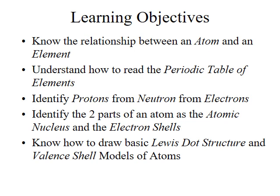So the learning objectives for today: you're going to learn about the relationship between the atom and the element, understand how to read the periodic table of elements, be able to identify protons from neutrons from electrons, identify the two key parts of the atom called the atomic nucleus and the electron shells, and know how to draw basic Lewis dot structures and valence shell models of atoms.